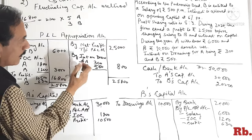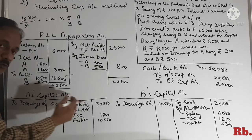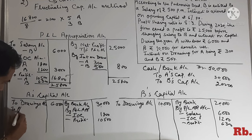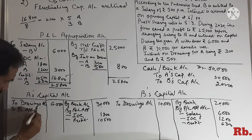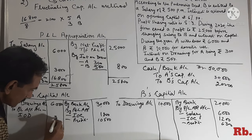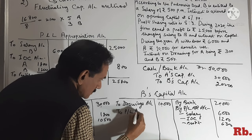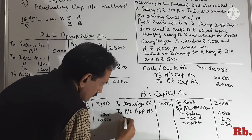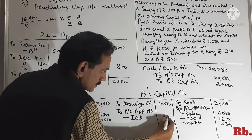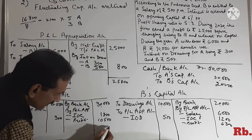P&L Appropriations mein interest on drawings dikh raha hai A aur B ka, to interest on drawings capital account mein debit ho jayega — capital account ko reduce karega. To P&L Appropriations Account — interest on drawings: A Rs.300 aur B Rs.500.